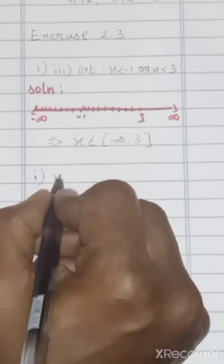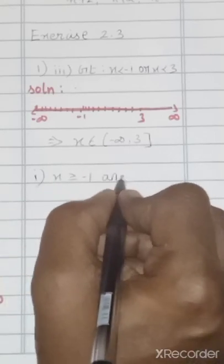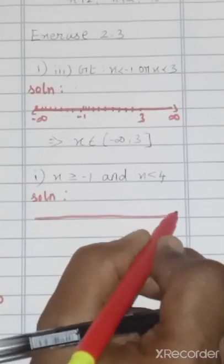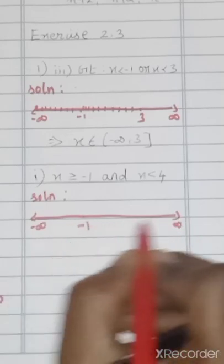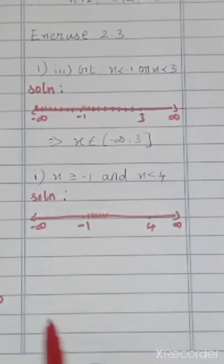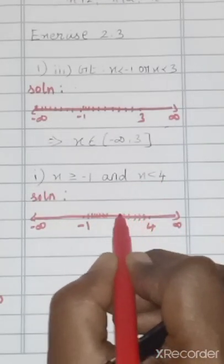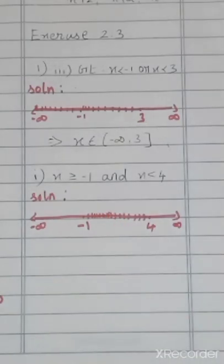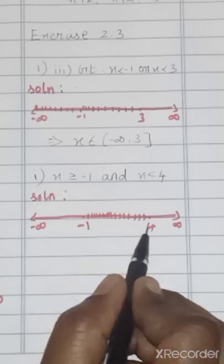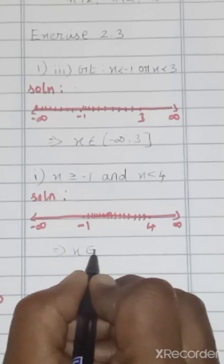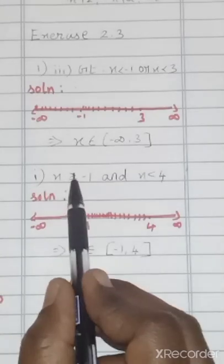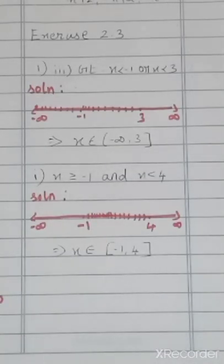First subdivision: x ≥ −1 and x < 4. On the number line, −1 is here and 4 is here. x ≥ −1 means this area to the right; x < 4 means this area to the left. The solution is between −1 and 4. Therefore, x ∈ [−1, 4). Square brackets are used because less than or equal to is given — both values we have to consider.